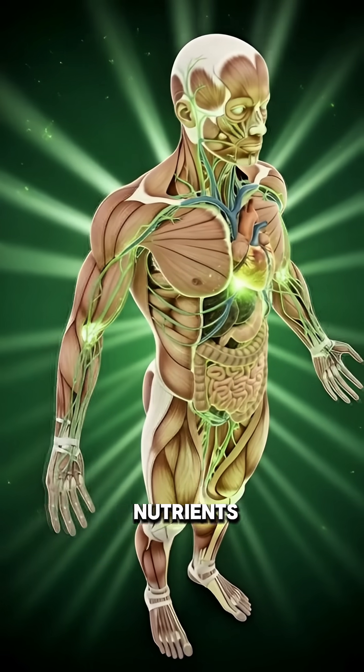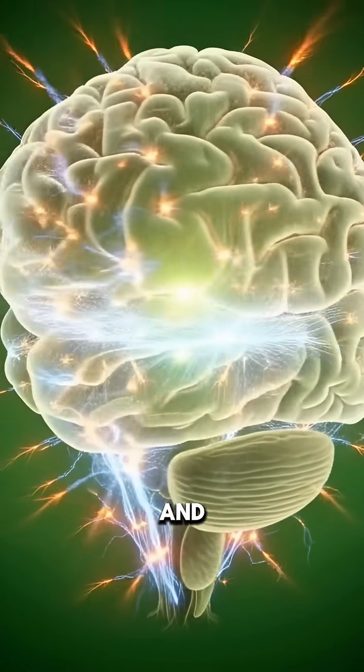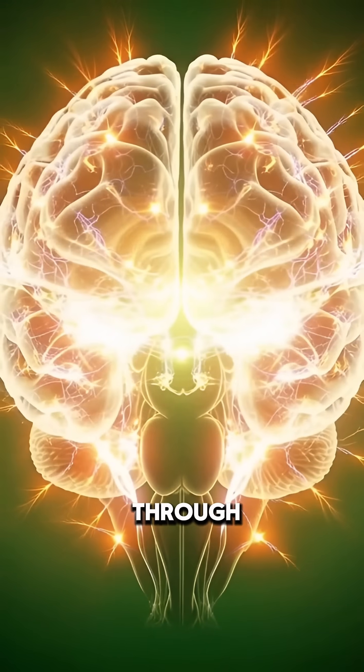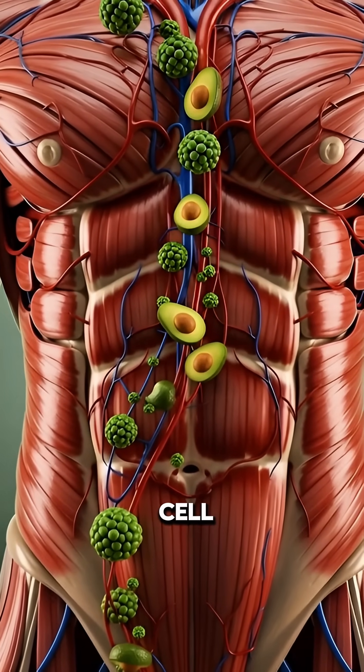Inside the intestines, nutrients are absorbed at a microscopic level. Vitamins, antioxidants, and monounsaturated fats pass through the intestinal lining and enter the bloodstream, fueling the body cell by cell.